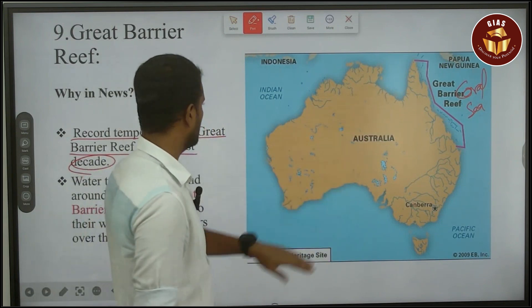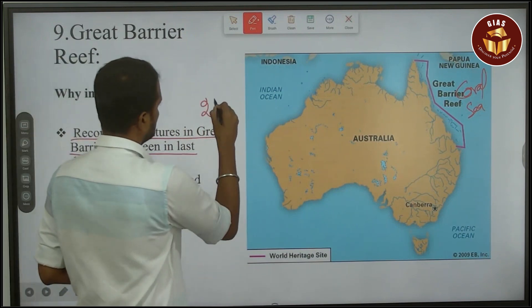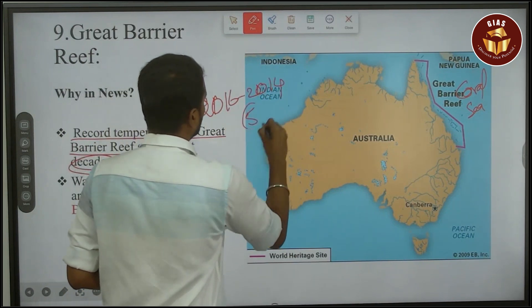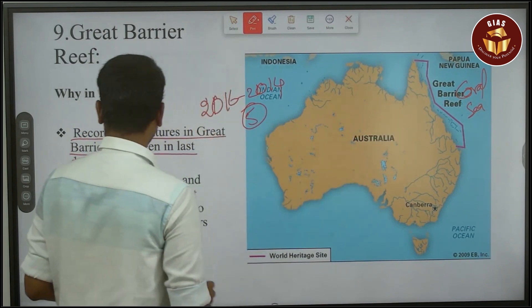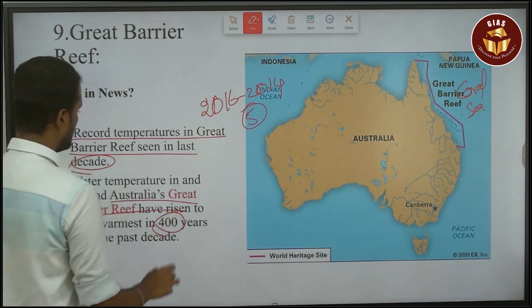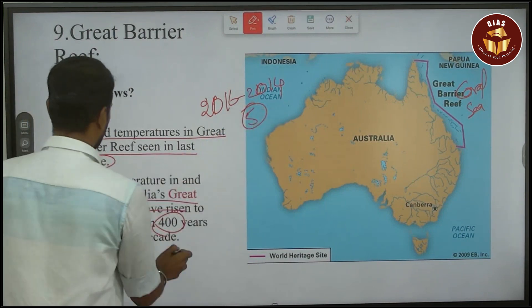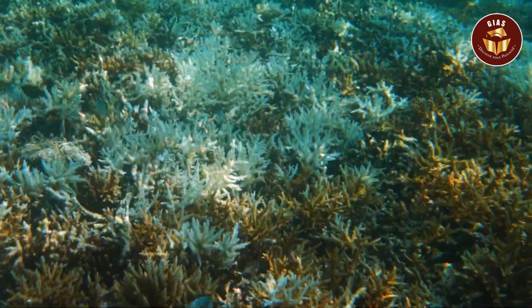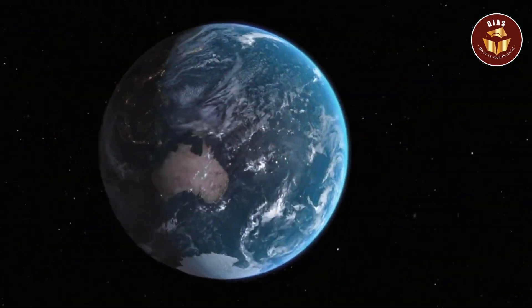There is a lot of pressure and temperature in the area, causing major coral bleaching in the coral reef system. The Great Barrier Reef is located in the Coral Sea off the coast of Queensland, Australia.